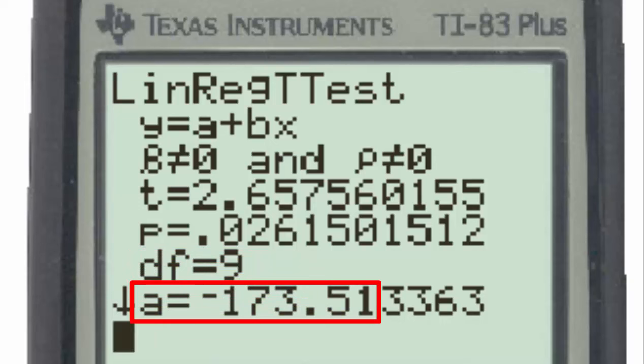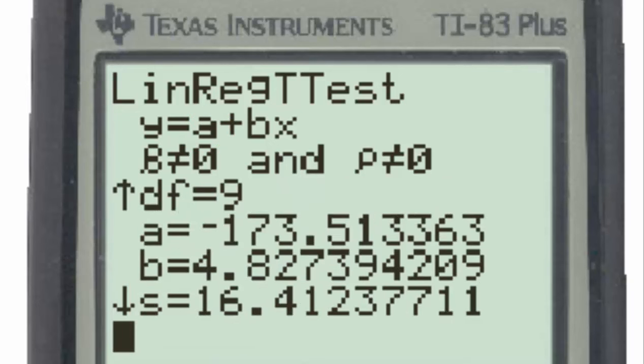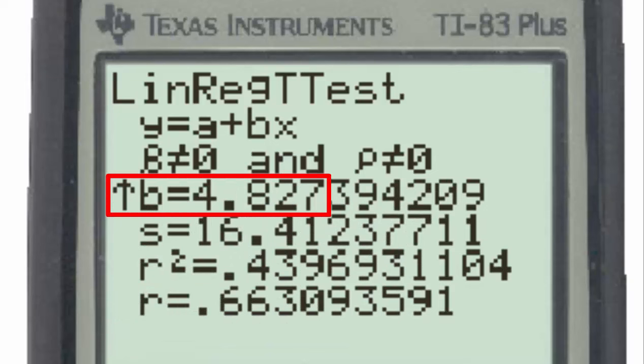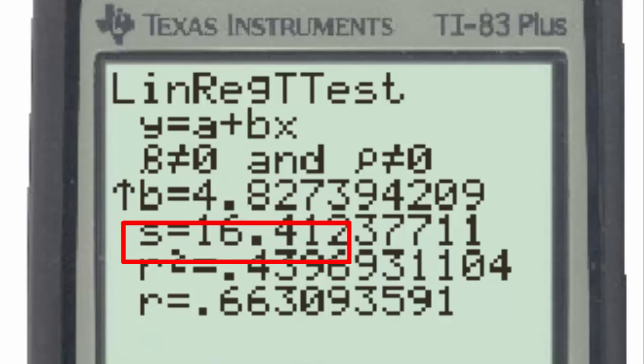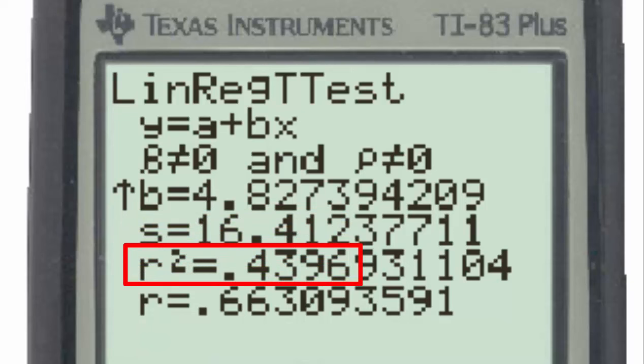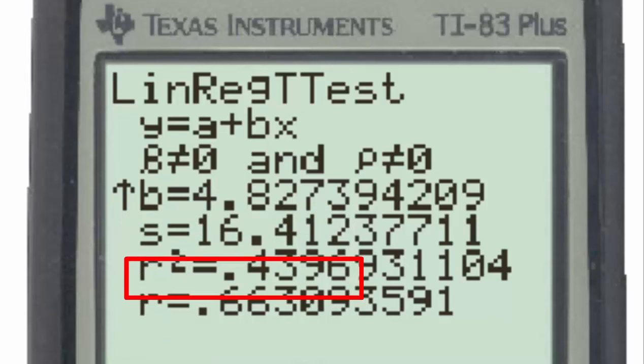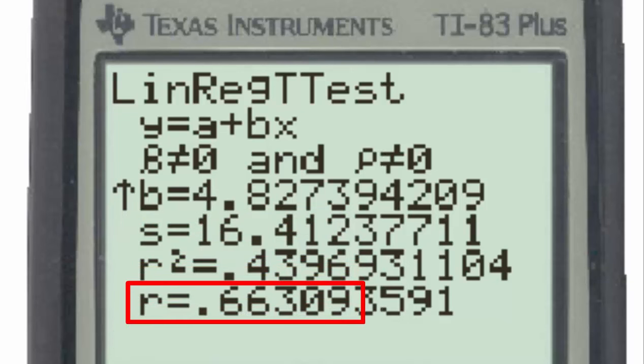Here, a equal to negative 173.5 refers to the a in the regression equation, and in the regression equation, a is the y-intercept. Using the down arrow to continue down the list, we see that b is equal to 4.83 approximately. b is the slope of the regression line. s is the standard deviation. r squared is called the coefficient of determination, and r is the correlation coefficient.